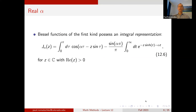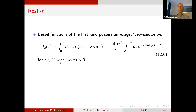Bessel functions also possess an integral representation. For the Bessel functions of the first kind there is an integral from 0 to π of a cosine of a sine term, minus sine(απ)/π times an integral over the real line of an exponential function, valid as long as z is in the complex numbers with positive real part. This simplifies for integer α since the second piece vanishes.